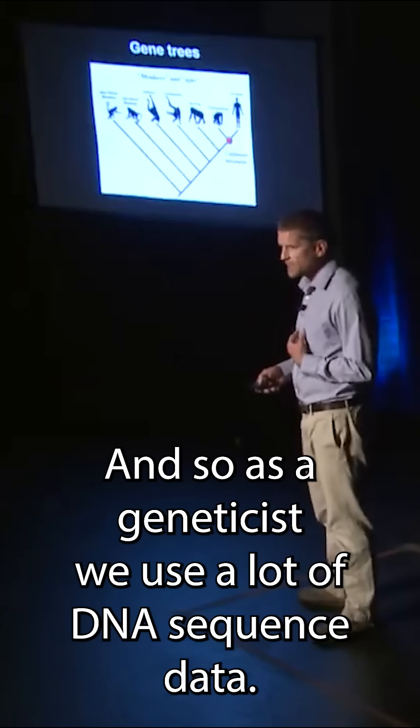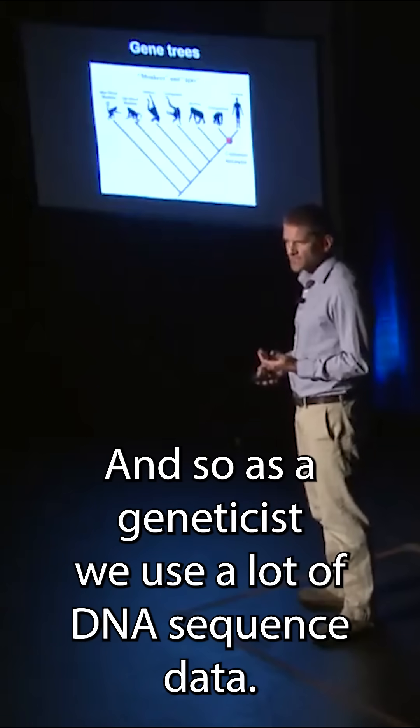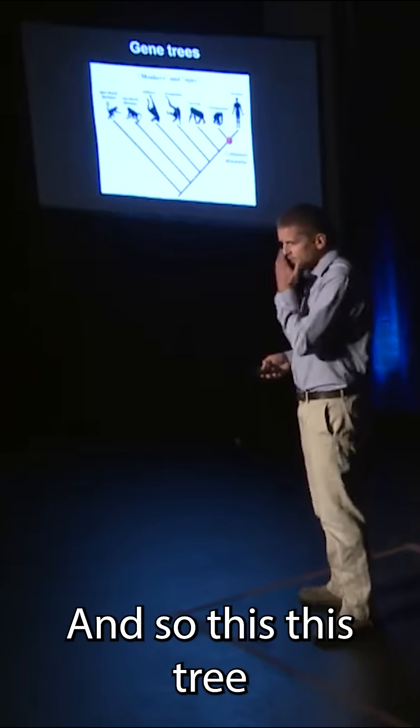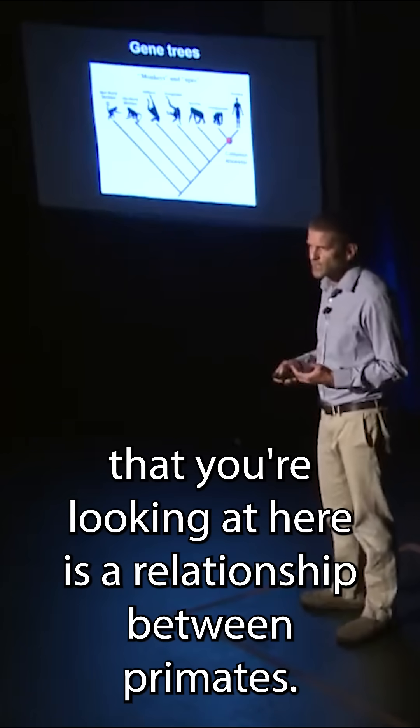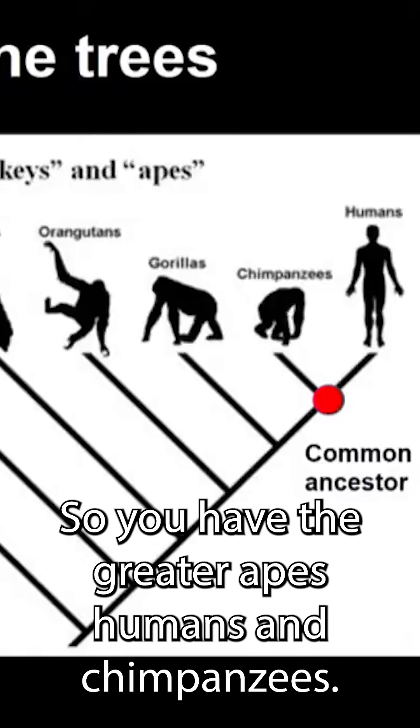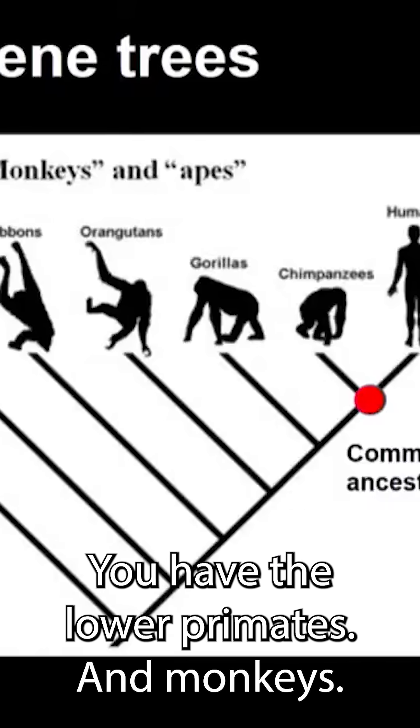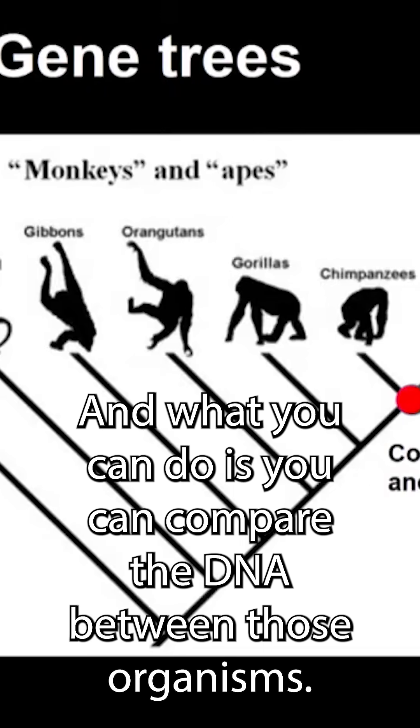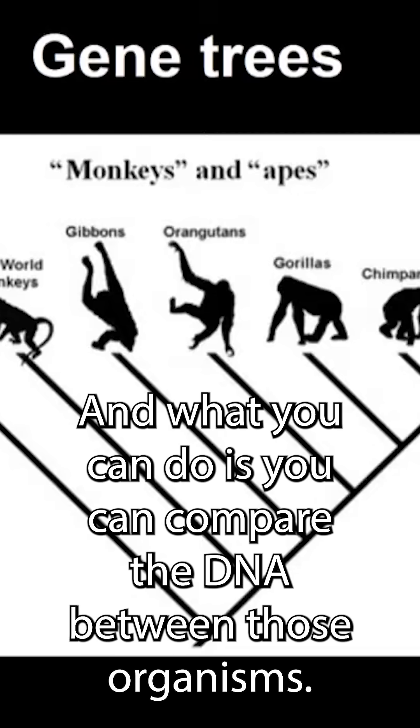As a geneticist, we use a lot of DNA sequence data. This tree that you're looking at here is a relationship between primates. So you have the greater apes, humans and chimpanzees, you have the lower primates and monkeys. And what you can do is you can compare the DNA between those organisms.